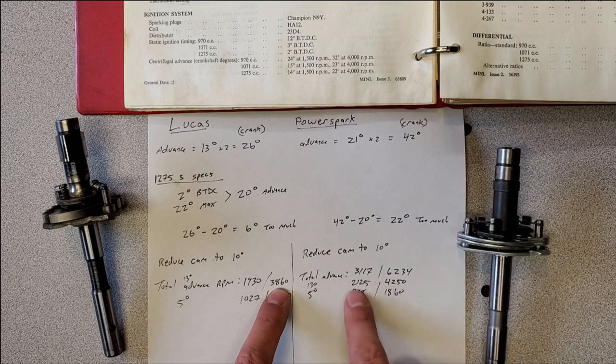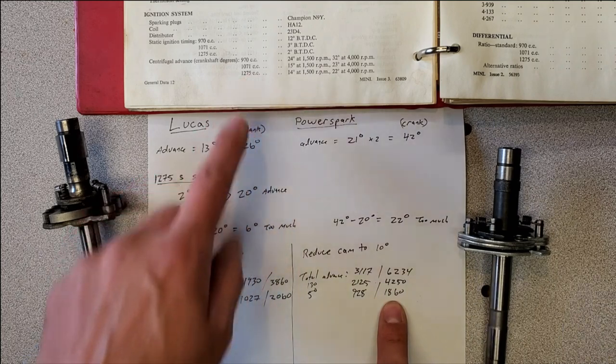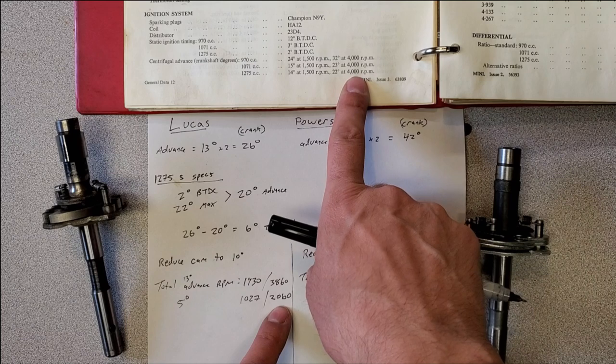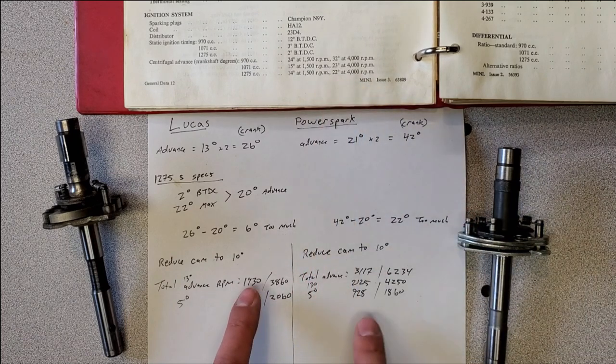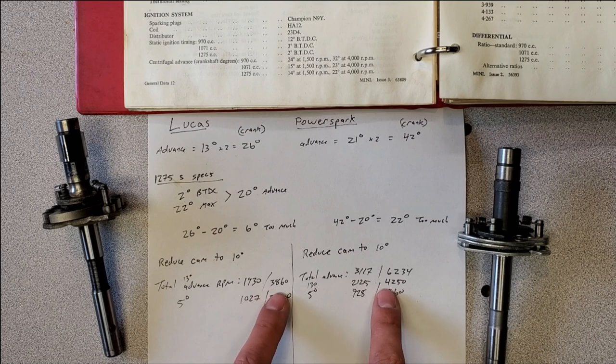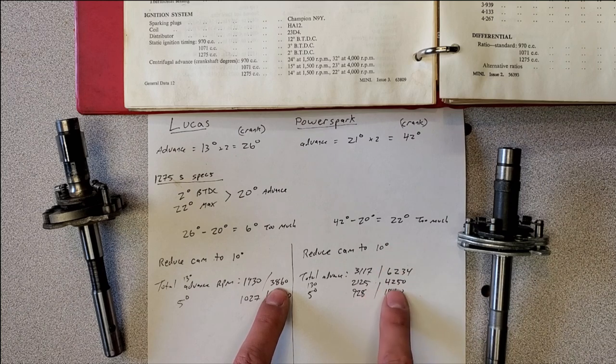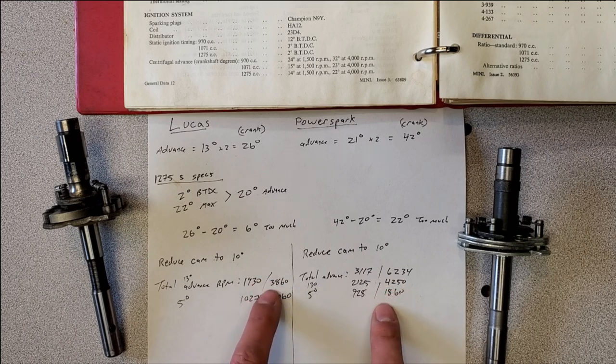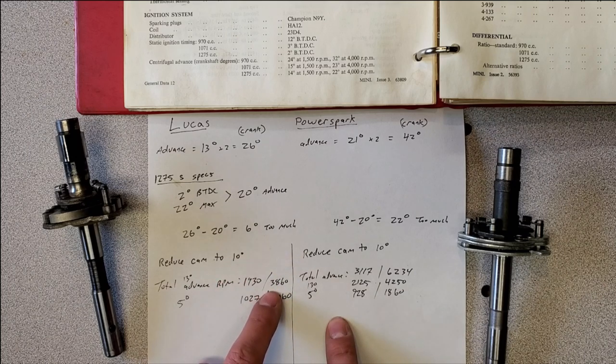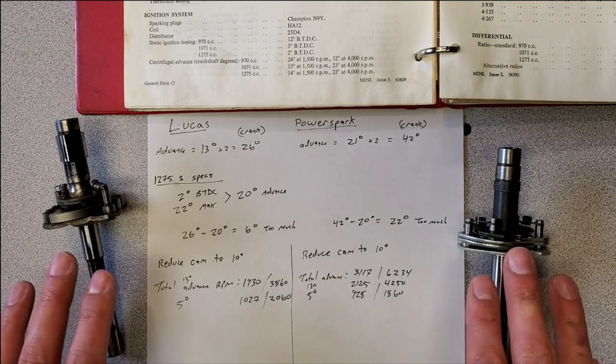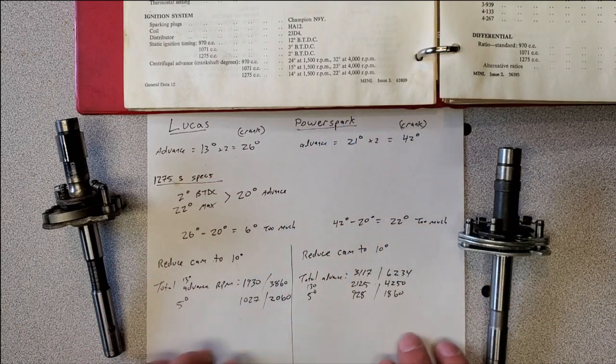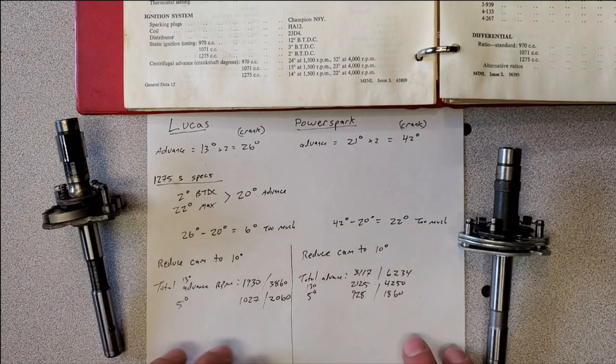But the PowerSpark kept advancing up to 6,000 RPMs. Now, in this example using the book, we noted that top speed was 4,000 RPMs and 22 degrees. So both of these were kind of close. If the PowerSpark was limited to 13 degrees, it might achieve that at 4,000 RPMs. The Lucas one was a little fast to get there. And on top of that, it was 6 degrees more advanced than you were expecting. So both of these units are wrong for this specific application.